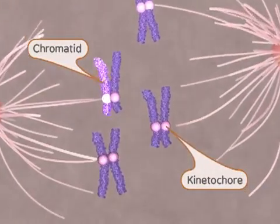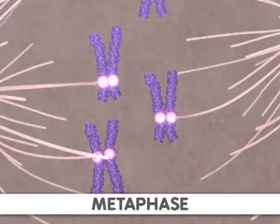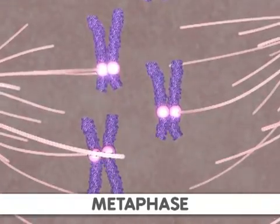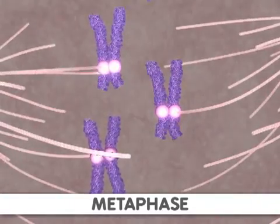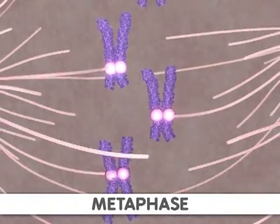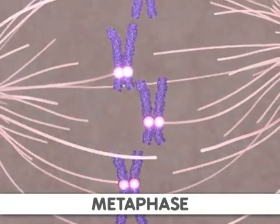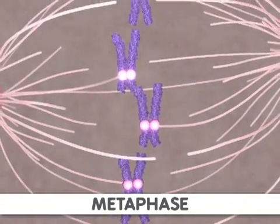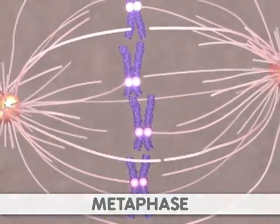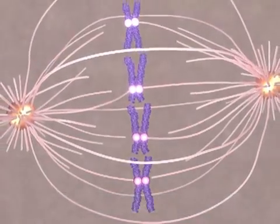Next comes metaphase. During this stage, the sister chromatids align along the center of the cell so that both chromatids face toward opposite poles of the cell. Now, the sister chromatids are ready to be separated.